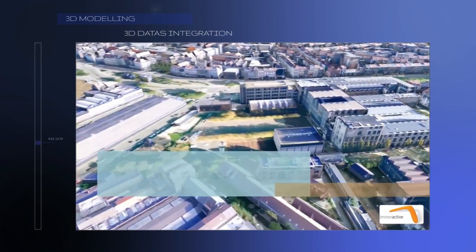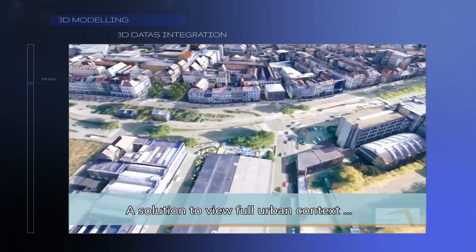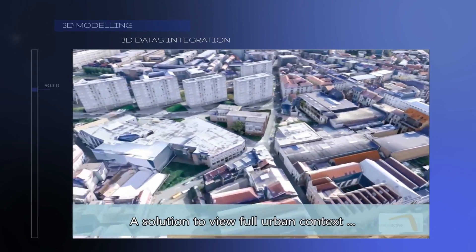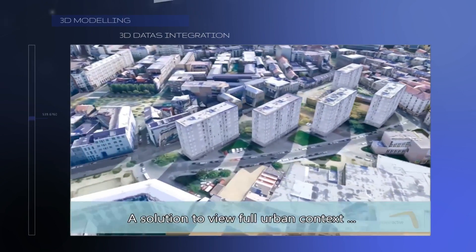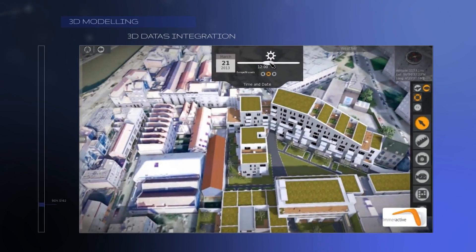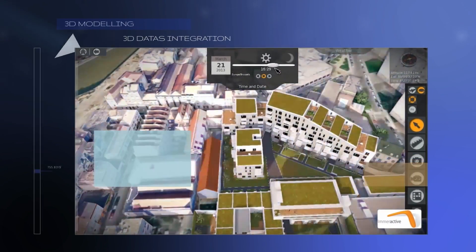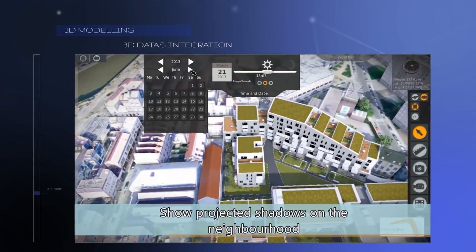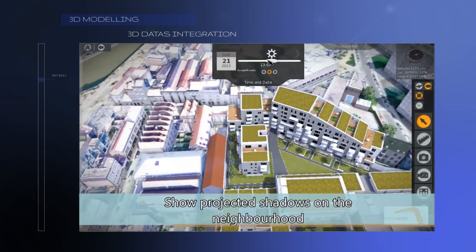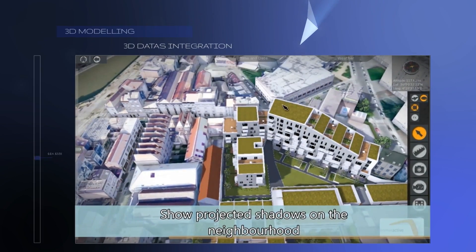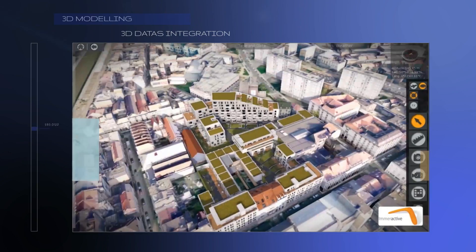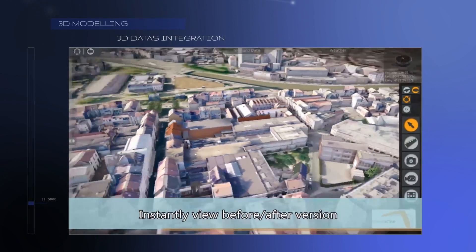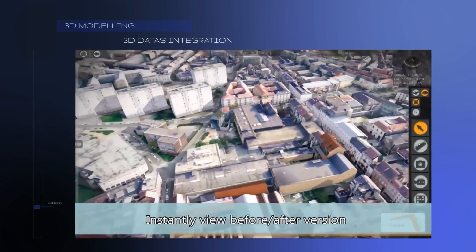The second step is complete integration of 3D data through a user interface for viewing full urban context. Display projected shadows at a given period. Compare different versions of a project and take unlimited snapshots of different points of view.